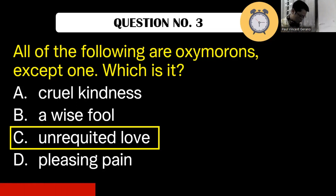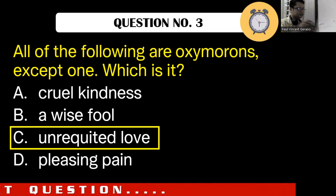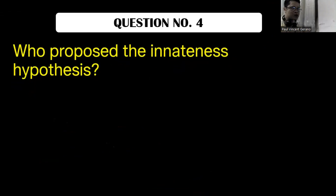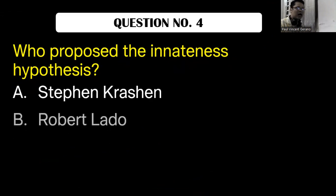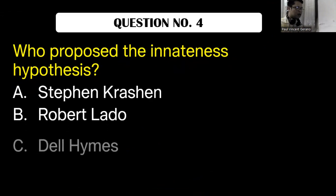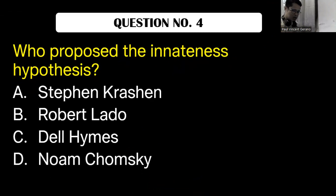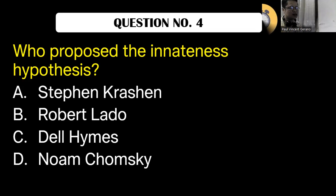Now let's go to question number four. Who proposed the innateness hypothesis? A, Stephen Krashen. B, Robert Lado. C, Dell Hymes. D, Noam Chomsky. What is the correct answer?